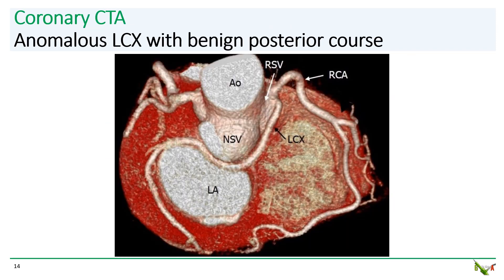This is a coronary CTA of a patient with an anomalous left circumflex — this is not our patient. In this particular case, you can see that the circumflex takes a benign low-risk course posterior to the aorta, so revascularization would not be indicated for this patient.